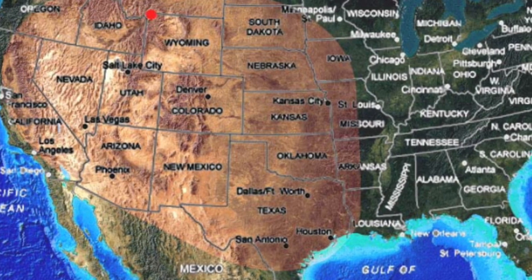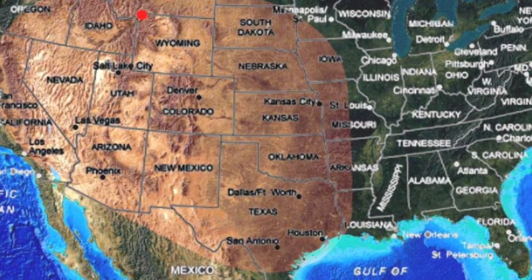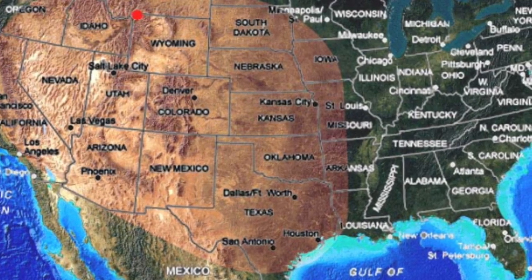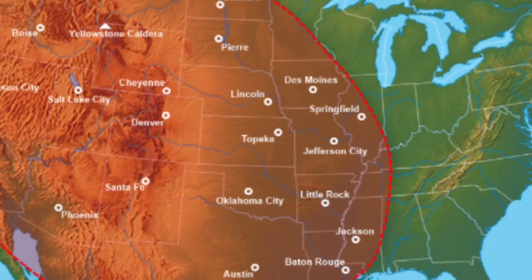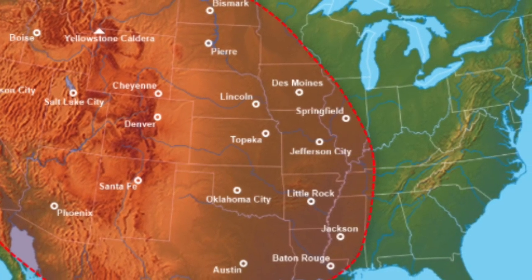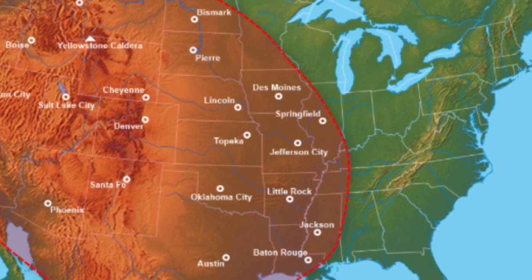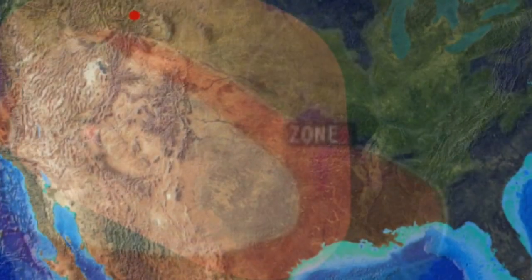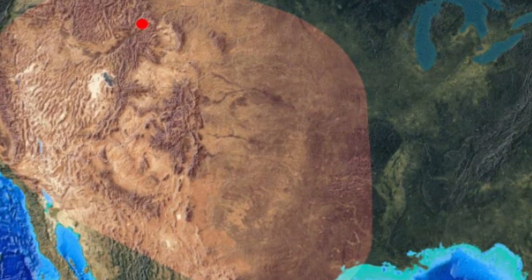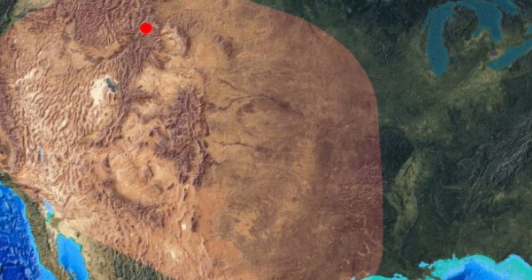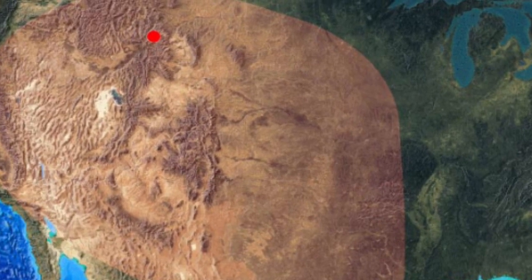Terrifying Yellowstone eruption maps reveal that eruption simulations show an unexpected blast would produce ash fallout from the northwest US down to the southern tip of Florida. Volcanic ash fallout of more than 39.4 inches — one meter — would blanket Yellowstone's immediate vicinity in the states of Wyoming, Montana, and Utah.